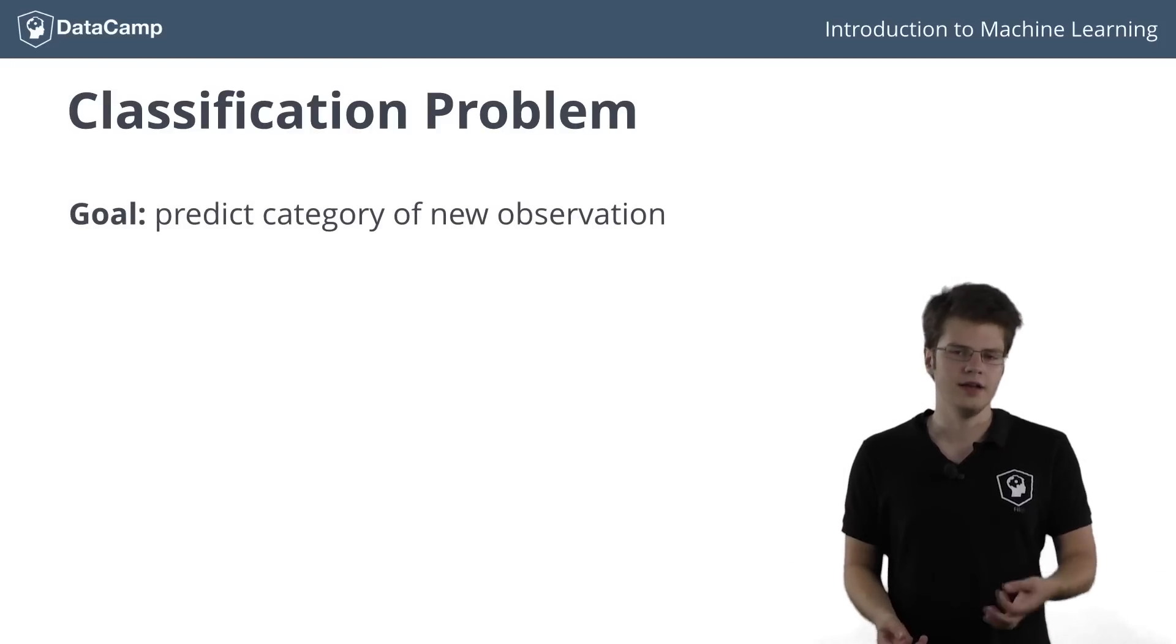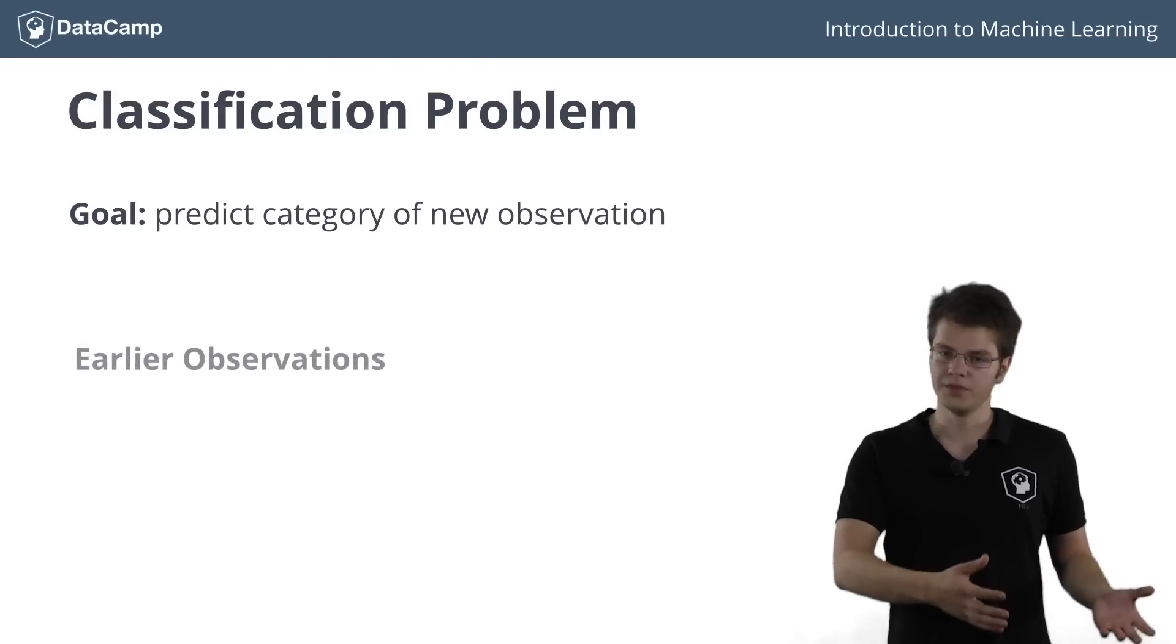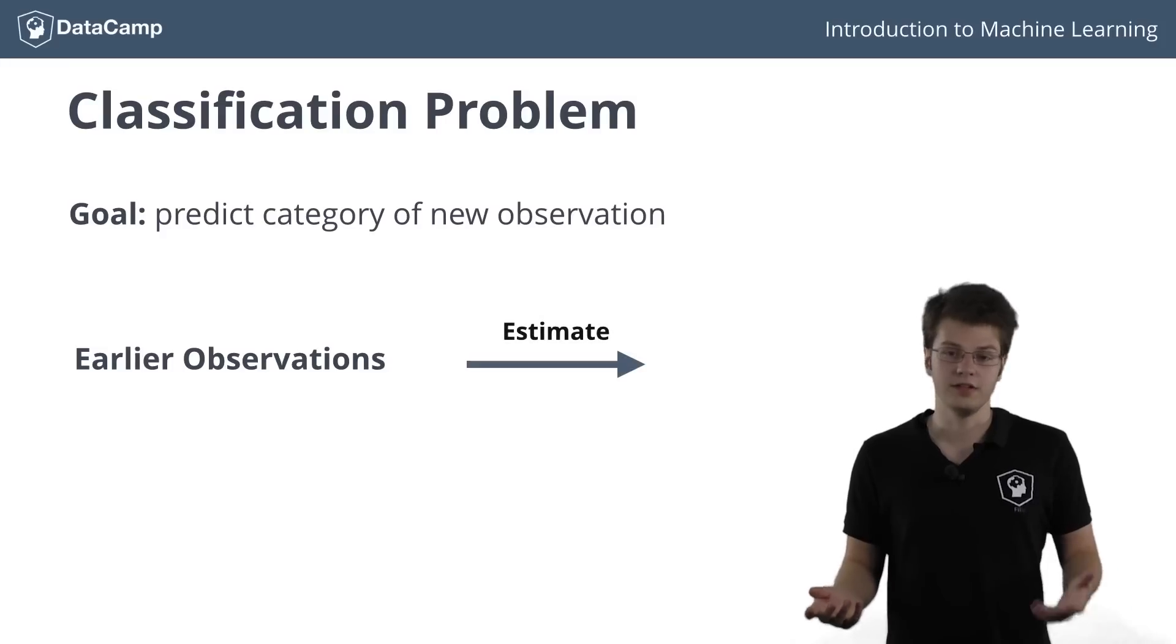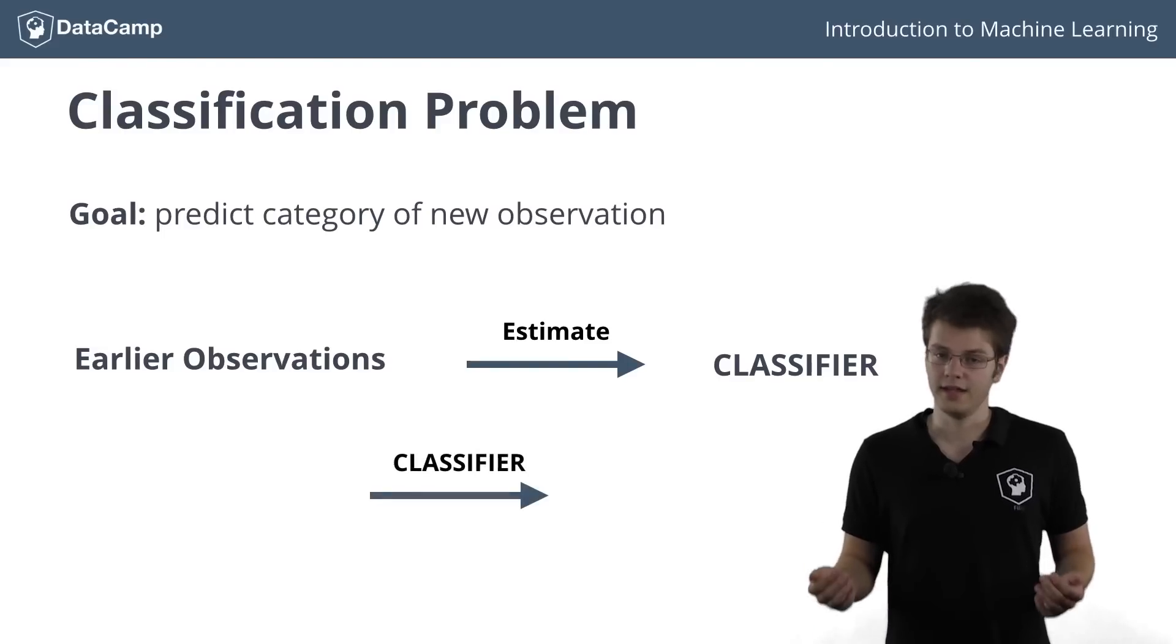Remember how I compared machine learning to the estimation of a function? Based on earlier observations of how the input maps to the output, classification tries to estimate a classifier that can generate an output for an arbitrary input. A classifier can then label an unseen example with a class.